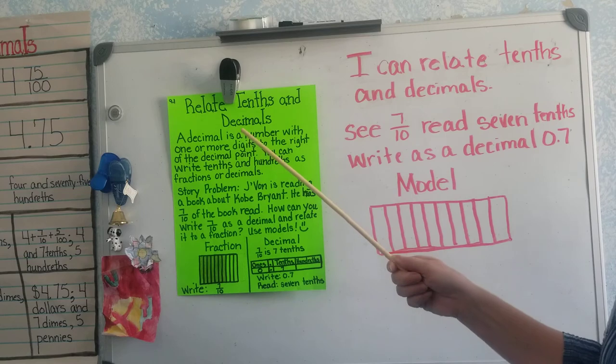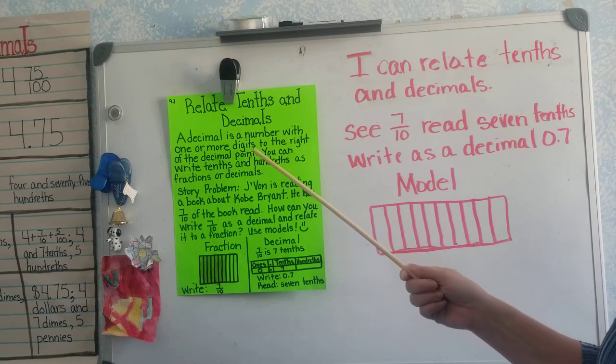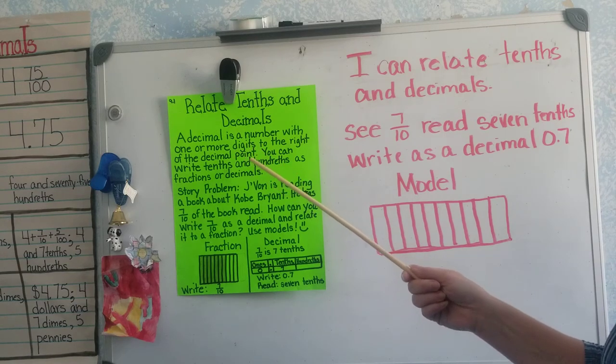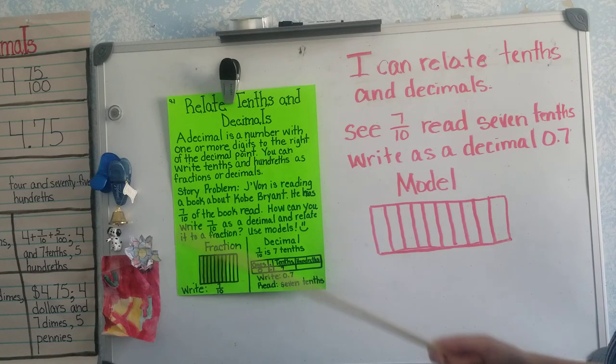A decimal is a number with one or more digits to the right of the decimal point. You can write tenths and hundredths as fractions or decimals.